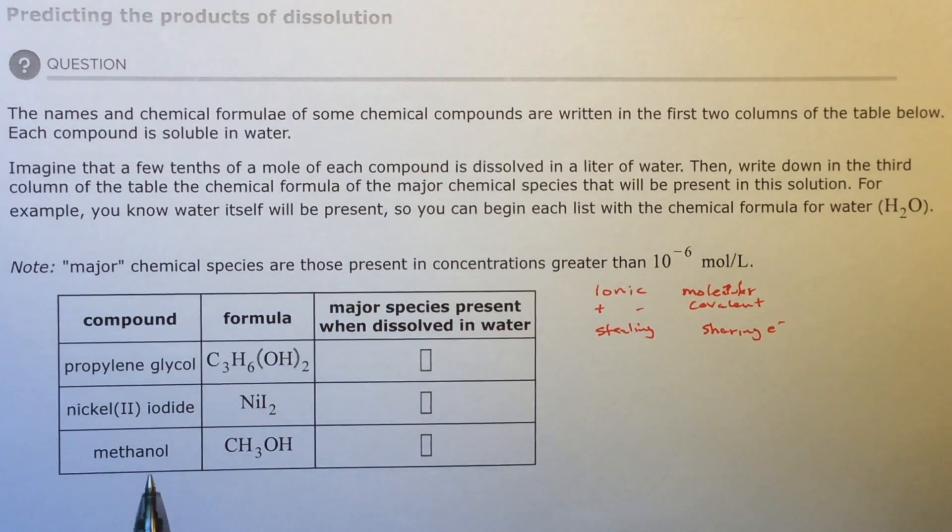If you want to know what is present in the water, you'll always have water molecules. If you have a covalent molecule, you'll have water plus that covalent molecule because it's not going to break apart. If you have an ionic molecule, which is a formula unit, you're going to have water plus the cation plus the anion. They rip apart into charges. So the question is: is this a molecular or covalent bond, or is it an ionic bond?